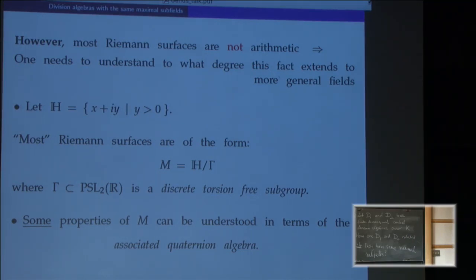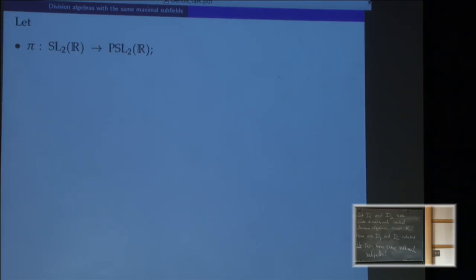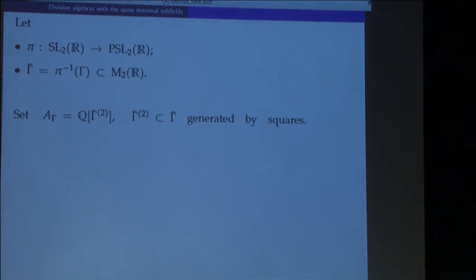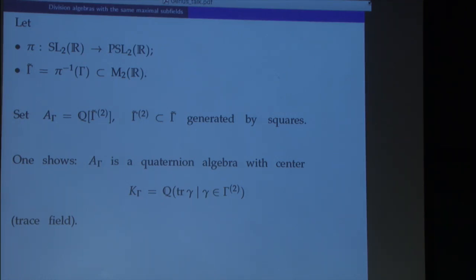Here's how the associated quaternion algebra is constructed. We lift our discrete subgroup into SL(2,R) and consider the subalgebra of M_2(R) generated over Q. For technical reasons, we take not the original subgroup gamma but rather the subgroup generated by squares to get the right algebra over the right field. We take the subgroup of gamma-tilde generated by squares and generate the Q-subalgebra inside M_2(R). One shows that this algebra A_gamma is actually a quaternion algebra whose center is the so-called trace field, generated by the traces of the elements in our discrete subgroup.